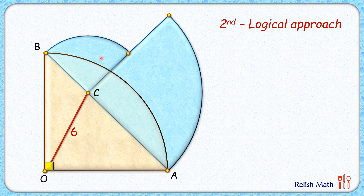So what if we shift point C slightly to the left, changing the dimensions of the brown quadrant and blue quadrant, while maintaining OC as 6 centimeters?